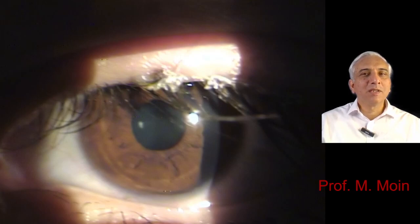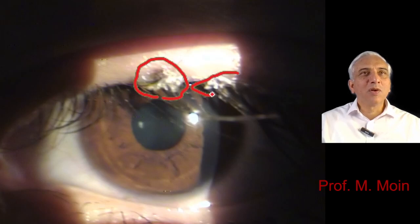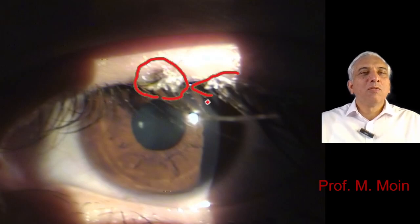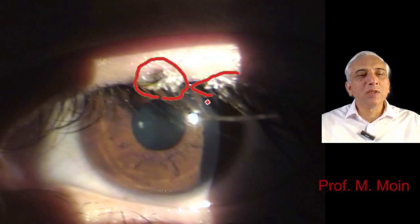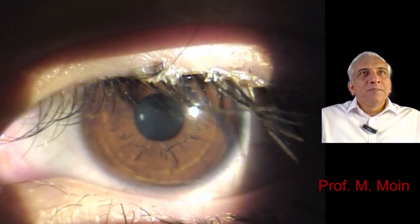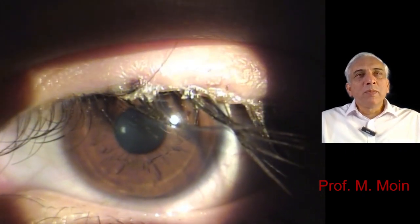Here you can see the lashes and this area of whitish or yellowish crusting present on the base of the lashes. This is called staphylococcal blepharitis. You need to distinguish it from different other types of blepharitis, which would include seborrheic blepharitis and posterior blepharitis, in which you would have involvement of the meibomian glands.